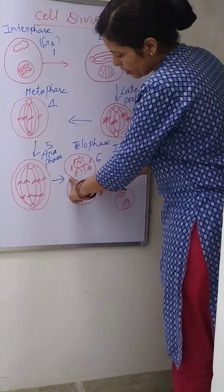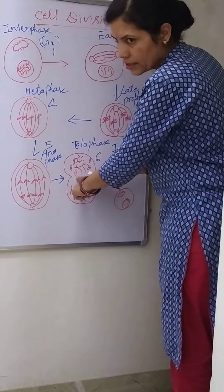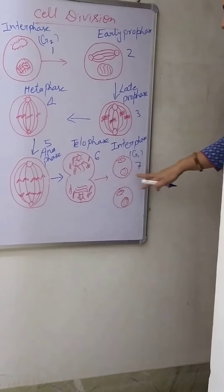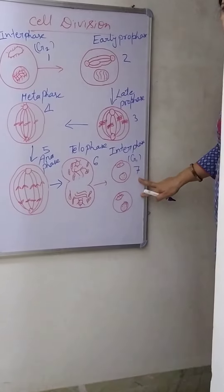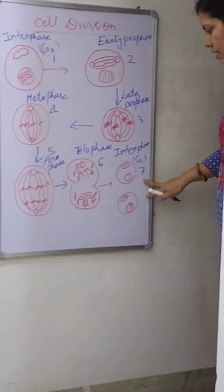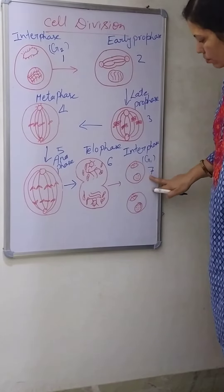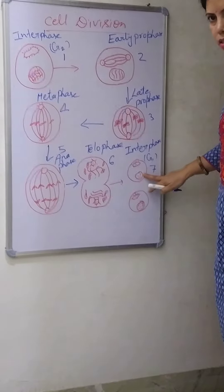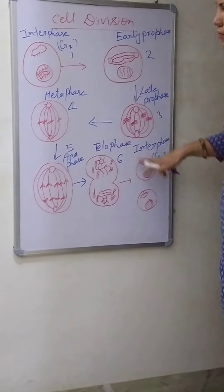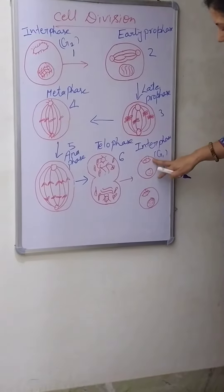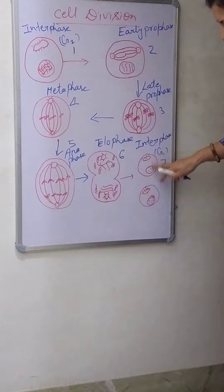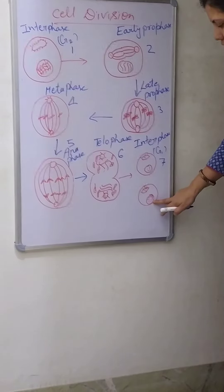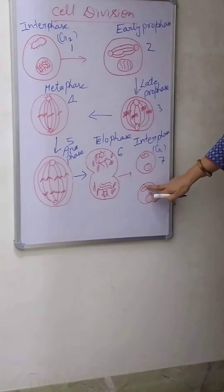The slit comes to the center of the cell, and now this cell divides into two daughter cells. Both daughter cells have one nucleus with a chromatin network and one centriole each.